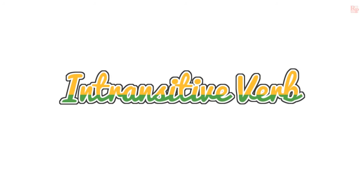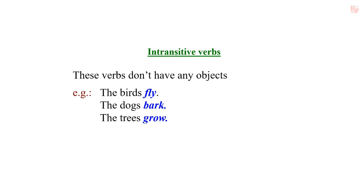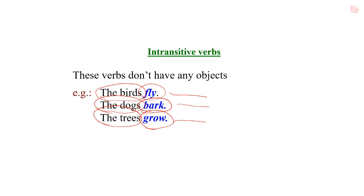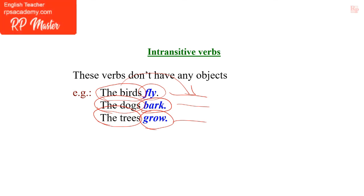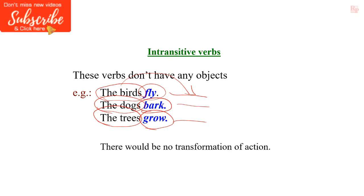What is an intransitive verb? The intransitive verbs don't have any objects. For example: the birds fly, the dogs bark, the trees grow. In these sentences we have the subject. The birds is the subject and fly is the verb. The dogs is the subject and bark is the verb. The trees is the subject and grow is the verb. But after that, there is no object written. That's why such type of verbs are called intransitive verbs. When there is an intransitive verb in a sentence, there would be no object. The action of the sentence is not transferred from subject to object. That's why these are all called intransitive verbs — there would be no transformation of action.